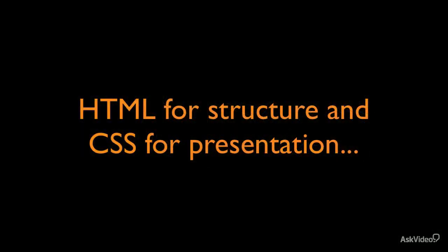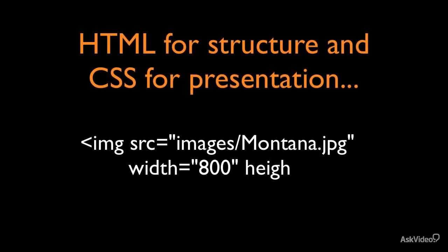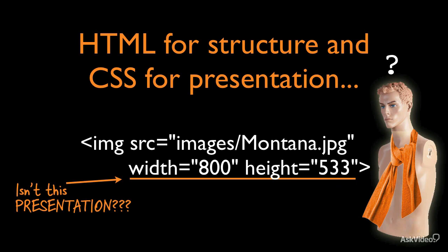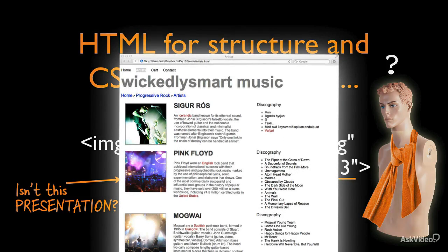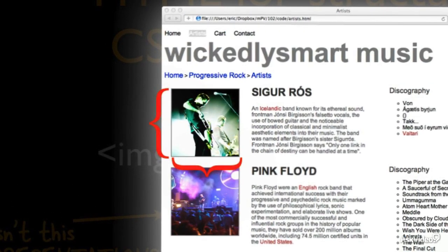So if we think about the image tag, we're using a width and height to dictate what the size of that image is going to be in the browser. Doesn't that sound a lot like presentation? Aren't we violating the intention of using HTML for structure by doing that? Well, if we think about the browser and an image, we could use width and height just to tell the browser what the size of the image is — almost think of that as giving it some hints, some metadata. We're really not telling it how to display that image necessarily, but we are telling it the size so it can do its job.